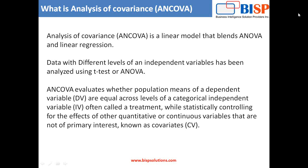Mathematically, ANCOVA decomposes the variance in the dependent variable into variance explained by the control covariates, variance explained by the categorical independent variables, and residual variance. ANCOVA can be used to increase statistical power — the ability to find a significant difference between groups when one exists — by reducing within-group error variance. The F-test evaluates differences between groups and is computed by dividing explained variance between groups by unexplained variance within groups.